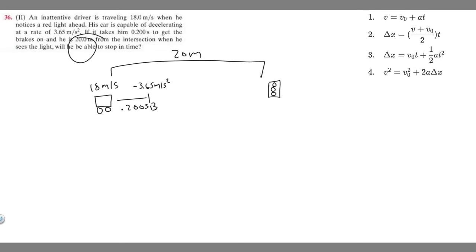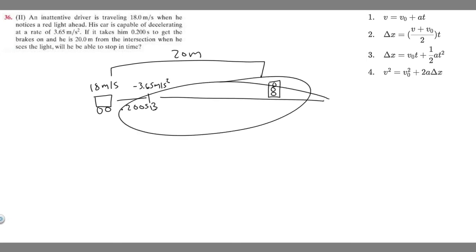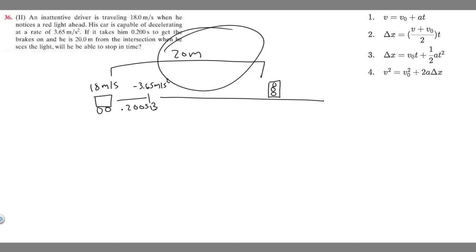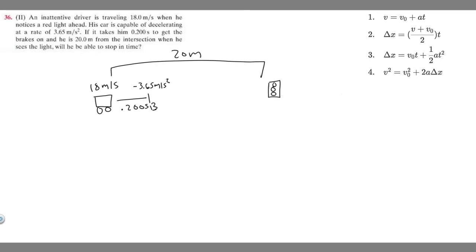We know he is 20 meters away from the intersection. We need to find the distance he travels during the reaction phase and then the distance he travels during braking, and check whether the total distance is greater or less than 20 meters. If it's less, he stops in time; if it's greater, he won't.